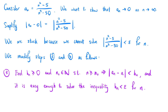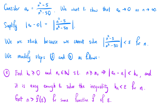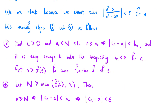For the modified third step, we find bn greater than or equal to 0 and n0 a natural number, such that when n is greater than or equal to n0 it implies that the absolute value of an minus a is less than bn, where it is easy to solve the inequality bn less than epsilon for n, giving n greater than f of epsilon. For the fourth step, we let capital N be greater than the maximum of f of epsilon and n0; then little n greater than or equal to N implies the absolute value of an minus a is less than bn, which implies the absolute value of an minus a is less than epsilon.